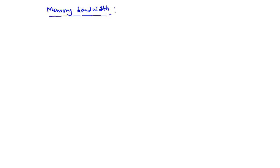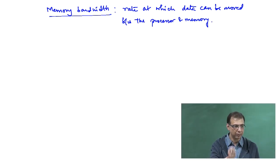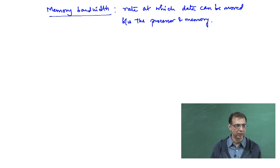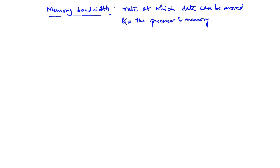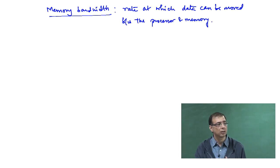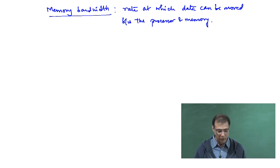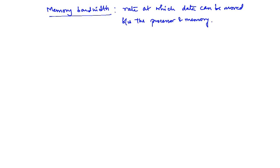So what is memory bandwidth? This is essentially the rate at which data can be moved between the processor and the memory. Note that this is not talking about the time it takes for the data to come back — this is talking about the total overall rate. For instance, how long does it take to execute one instruction? It might take 5, 10, or 15 nanoseconds, but the throughput with pipelining is one instruction completed every nanosecond. Memory bandwidth is similar.